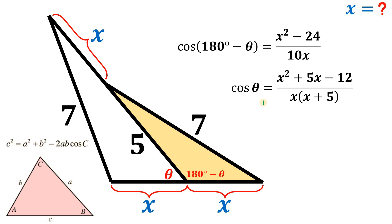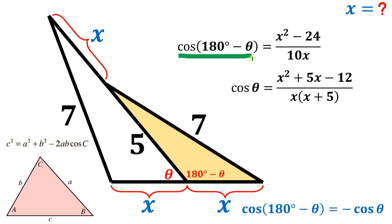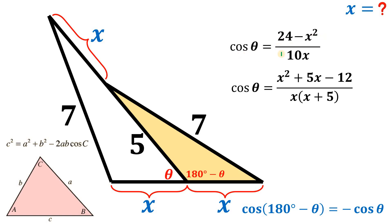We have an identity relating cos(180° − theta) to cos(theta): cos(180° − theta) = −cos(theta). Therefore we replace cos(180° − theta) with −cos(theta). Multiplying both sides by −1, we get cos(theta) = (24 − x²) / (10x).